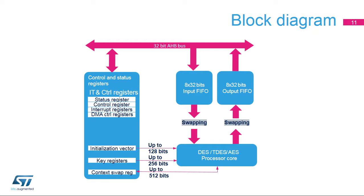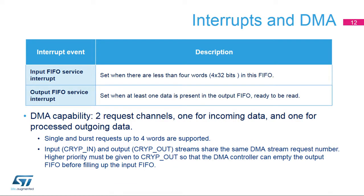The cryptographic processor block diagram is presented in the slide. The peripheral is composed of several hardware modules: the processor core responsible for one AES or DES block operation, input and output FIFOs connected to the bus interconnect, and a module that embeds control and status registers. Two functional interrupts are defined for the peripheral: one set when the input FIFO is ready to receive data, and one set when output data are ready to be flushed by the CPU or the DMA. The DMA has two streams plugged to the cryptographic processor. These two streams share the same channel, number two. The output stream has higher priority than the input one.